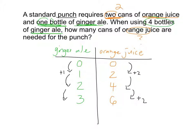Does this make sense? Are you starting to see a pattern? What do you think the next number will be? If I'm adding one bottle of ginger ale every time, let's add another bottle — now I have four bottles of ginger ale. How many more cans of orange juice do I need to add? We need to add another two cans of orange juice, so we'll have a total of eight cans of orange juice. Let's add one more: one more bottle of ginger ale gives us how many cans of orange juice? Ten.